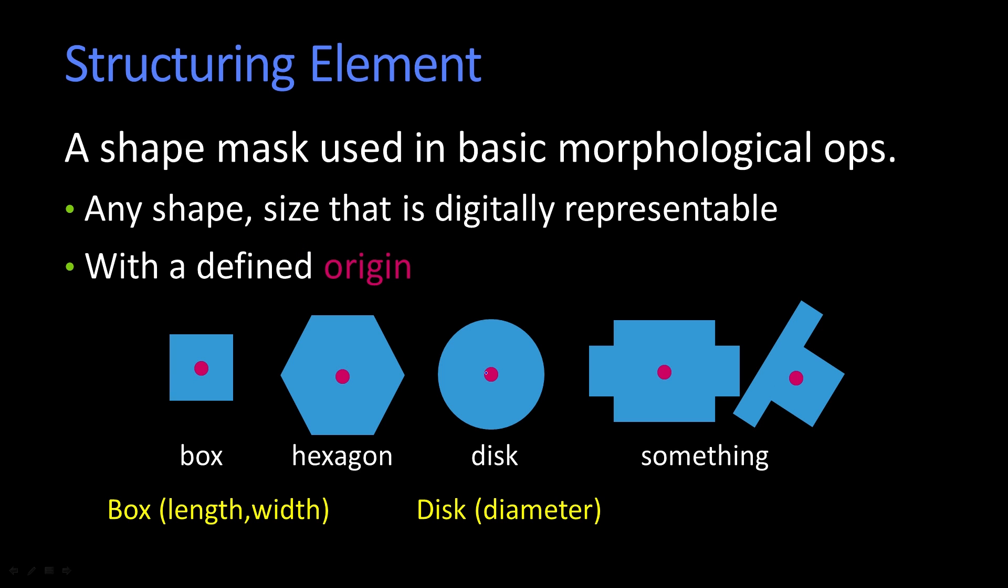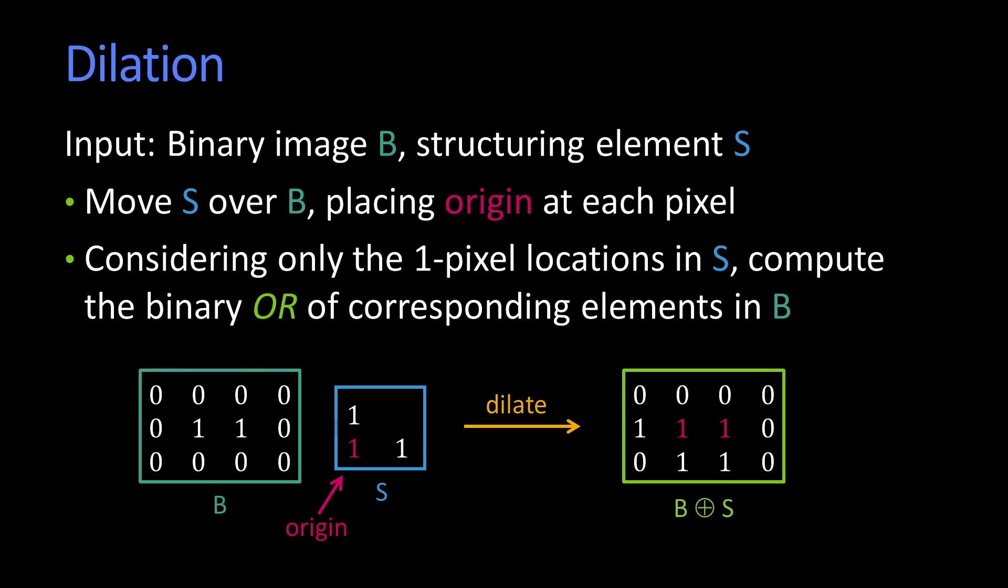So given a structuring element, we can define both dilation and erosion. Dilation is as follows. I've got some binary image B, and that's here. I've got a structuring element S, and the structuring element has to have an origin. What you do is you're going to take this dilation structuring element and run it around here, placing the origin at different places.